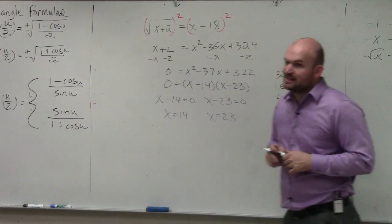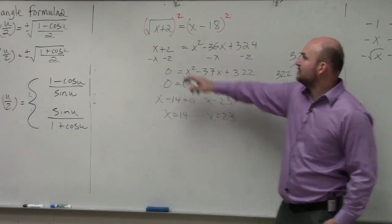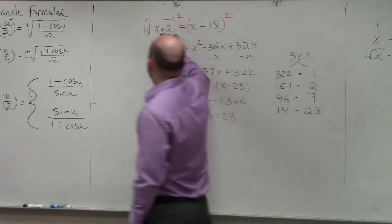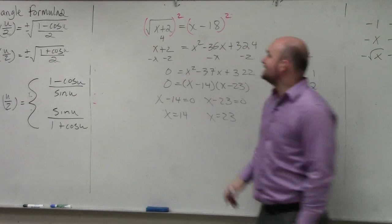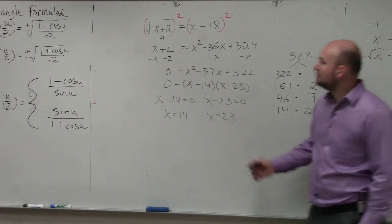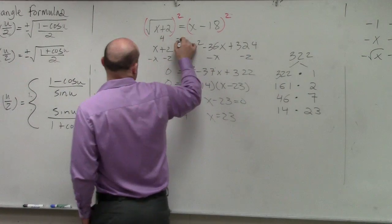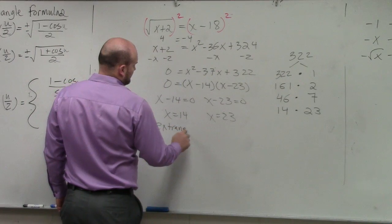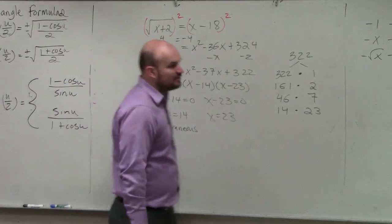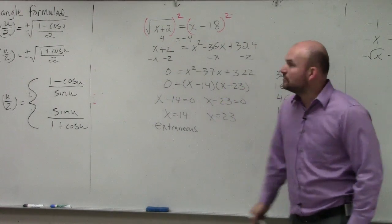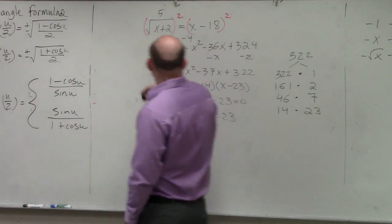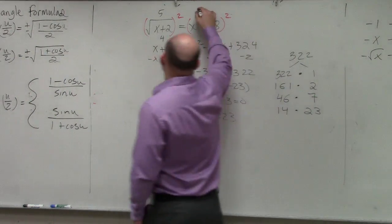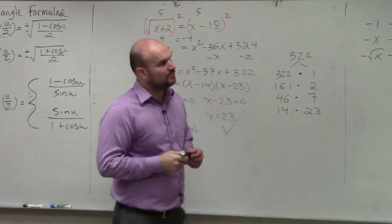We still need to check our answers. Let's plug in 14: 14 plus 2 is 16, and the square root of 16 is 4. But 14 minus 18 is negative 4. Since 4 does not equal negative 4, x equals 14 is extraneous. Now let's check 23: 23 plus 2 is 25, and the square root of 25 is 5. And 23 minus 18 is 5. So that answer works.